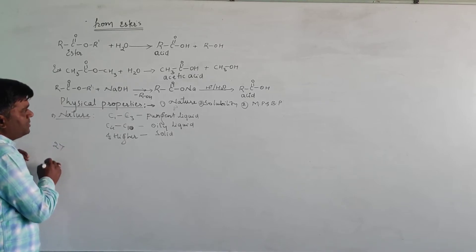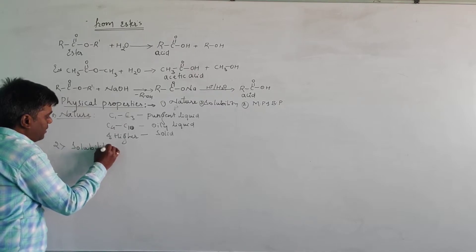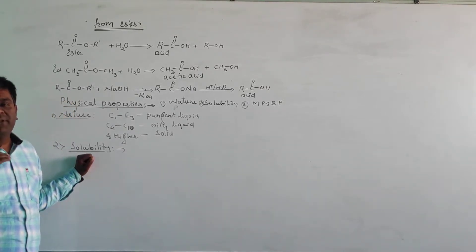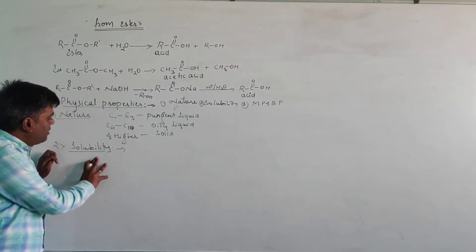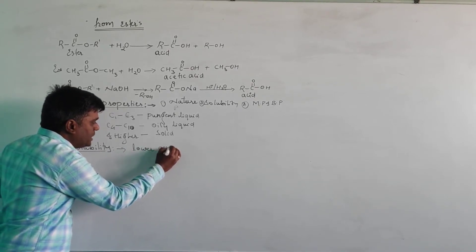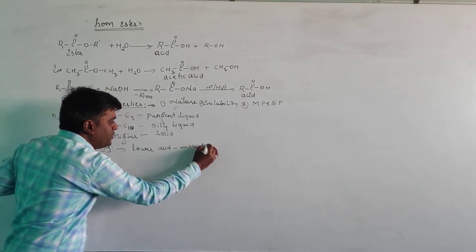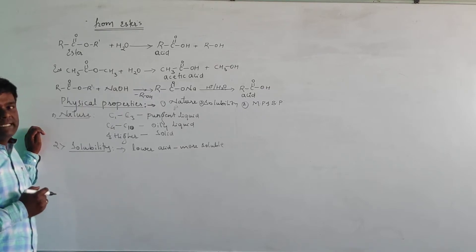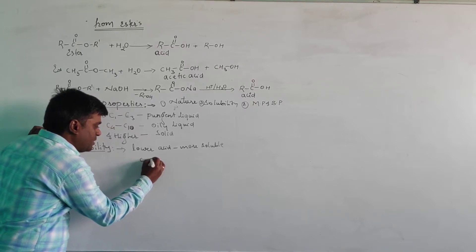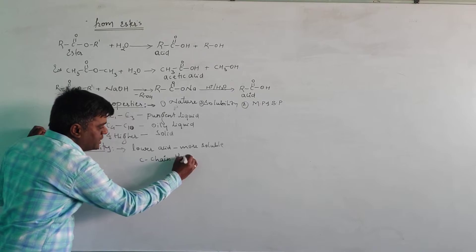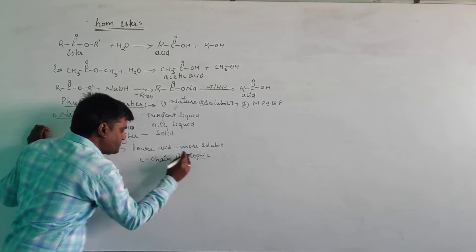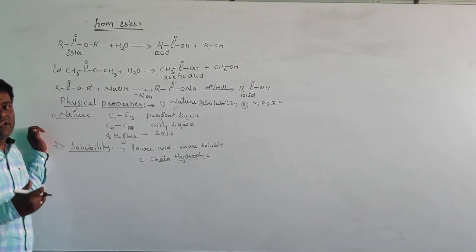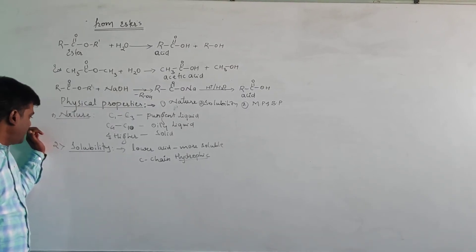The second property is solubility. The solubility of carboxylic acid in water increases with a decrease in the number of carbon atoms in the parent chain — lower carboxylic acids are more soluble in water. When the number of carbon atoms increases, the solubility decreases because the longer carbon chain is hydrophobic in nature. Due to the hydrophobic nature of the hydrocarbon part, they are less soluble in water.